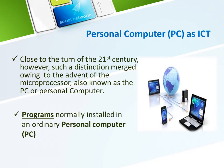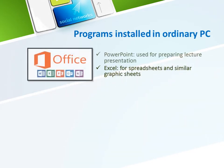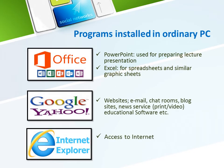Now, there are programs normally installed in an ordinary personal computer that will be presented in the next slides. To illustrate, let's examine the programs normally installed in an ordinary modern PC. We have Microsoft Office, which consists of Microsoft Word, Microsoft Excel, Microsoft PowerPoint, and Outlook. These are used for composing text, graphics, and photos into letters, articles, and reports. PowerPoint is used for preparing lecture presentations, and Excel is used for spreadsheets and similar graphic sheets.